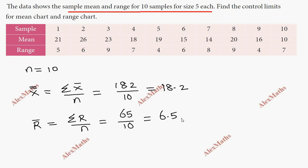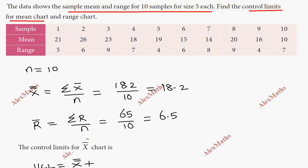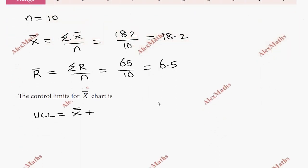So first, the control limits for the mean chart. The upper control limit formula is X double bar plus A2 times R bar. For sample size 5, you can get A2 from the table.